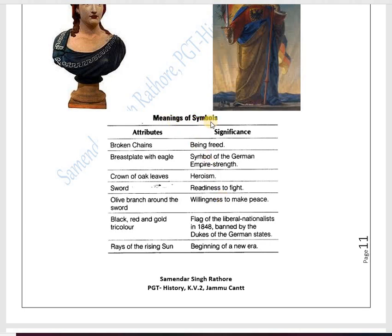Looking at the meaning of symbols, their attributes and significance: broken chains represent a person being freed. Breastplates with eagles are a symbol of the German empire's strength. Oaks or a crown of oak leaves stand for heroism. A sword means readiness to fight, while an olive branch around the sword means willingness to make peace.